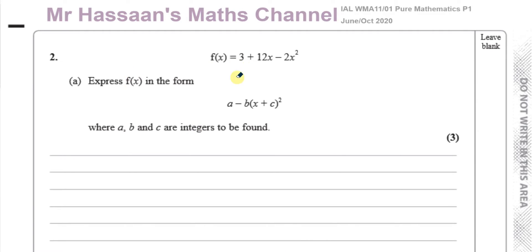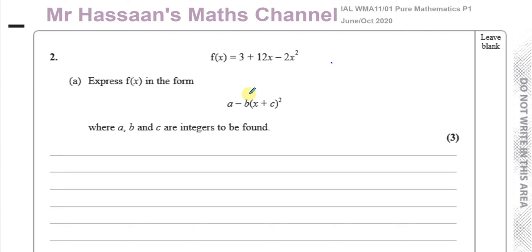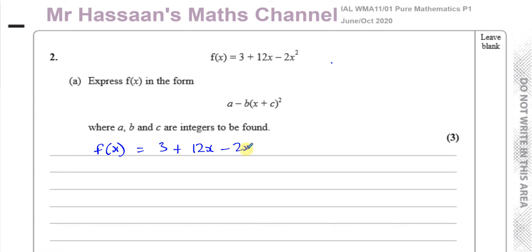This question, part A, is about completing the square. It's asking us to complete the square to express f(x), where f(x) = 3 + 12x - 2x². Express f(x) in the form A minus B times (x + C) all squared, where A, B, and C are integers to be found.